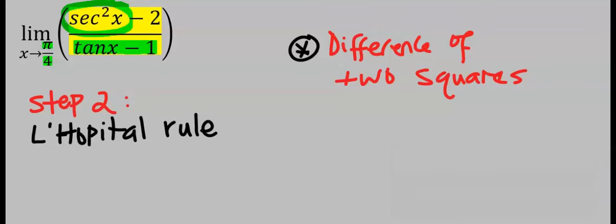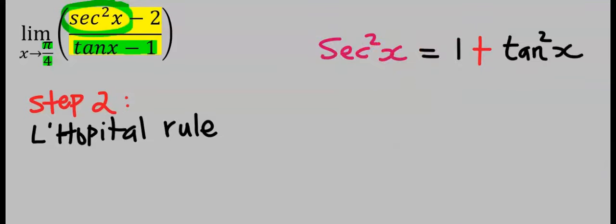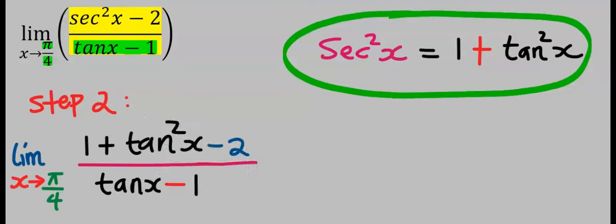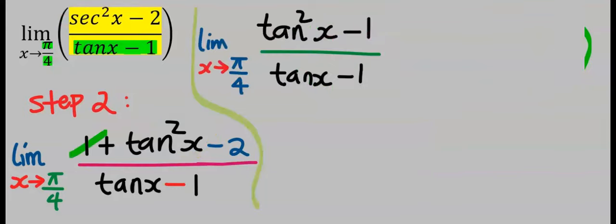Which is sec squared x equals one plus tan squared x. Hence, instead of sec squared x, I will replace it with one plus tan squared x with respect to this identity function. One minus two will give you minus one.